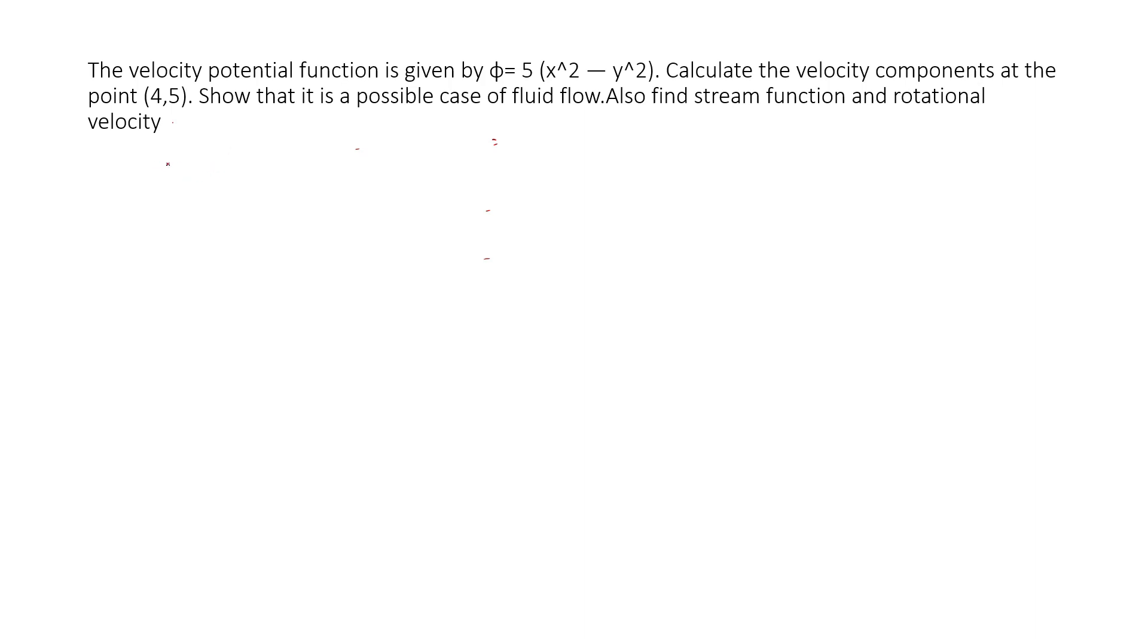Now we will do a problem on velocity potential function and stream function. The question is given like this: The velocity potential function is given by φ = 5(x² - y²). Calculate the velocity components at the point (4, 5). Show that it is a possible case of fluid flow. Also find stream function and rotational velocity.